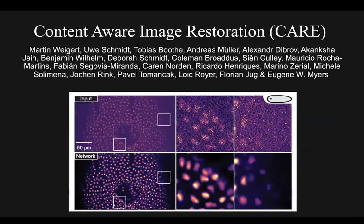The evolution of deep learning for denoising started in 2018 with content-aware image restoration, or CARE. CARE is, to this day, one of the most powerful deep learning approaches for denoising and can handle any noise type. But as Chad will explain later, it requires paired training data — matched pairs of noisy and clean images — which can be quite difficult to obtain in practice.